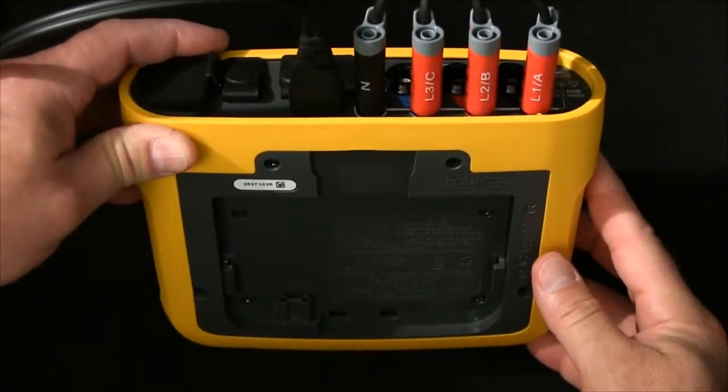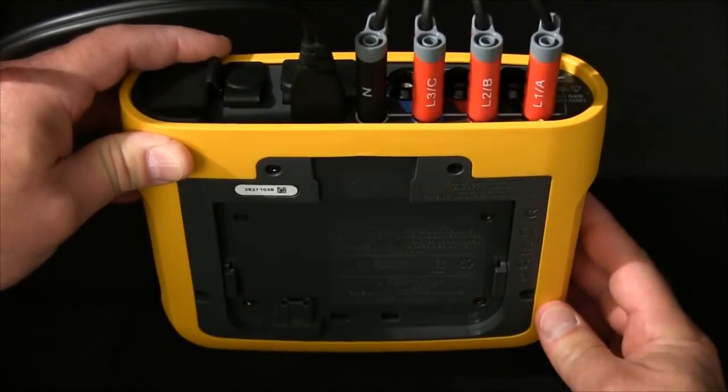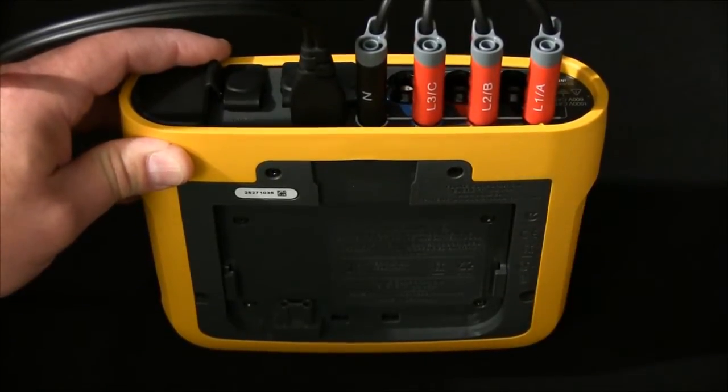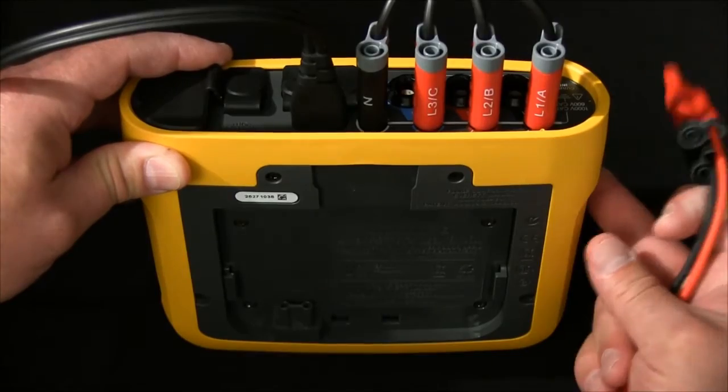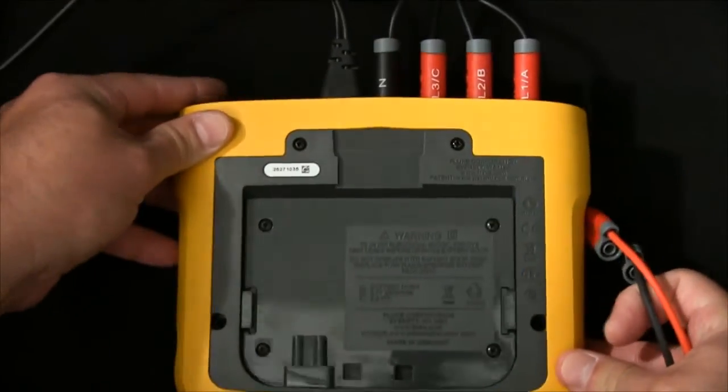So now I have my measurement leads phase A, B, C, and neutral to the instrument. And then to go from the measurement leads to the power supply, we have two choices.